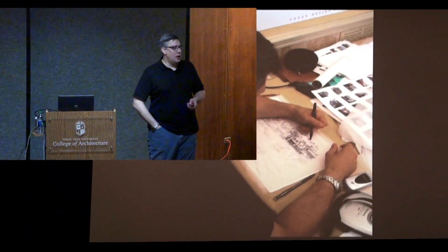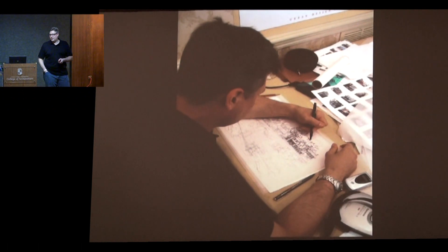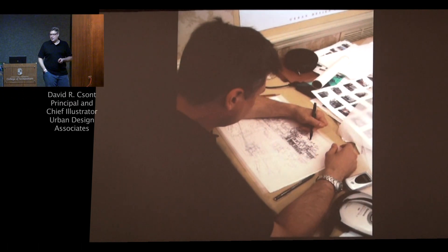He trained in England, moved to America, and ended up at Carnegie Mellon in Pittsburgh to form the Urban Design Lab, which was one of the first urban design program organizations in the country. At the same time, he formed Urban Design Associates as a firm that would initiate some of the theories and ideas he had about fair housing.